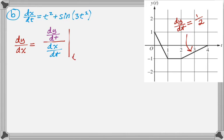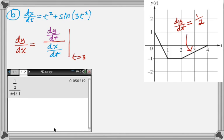So at t equals 3, dy/dt is 1 half. And then dx/dt is definitely going to take a calculator. So I did 1 half divided by dx of 3. Remember, I stored dx as the derivative. And I got 0.050. So approximately 0.050, and we're done with that part.